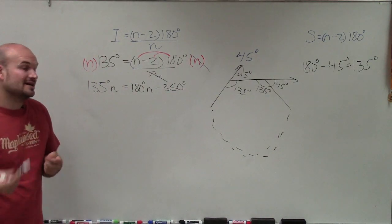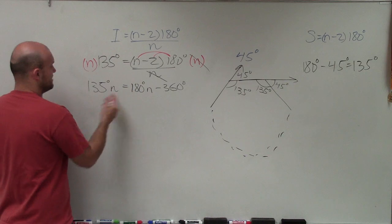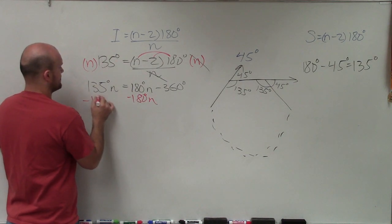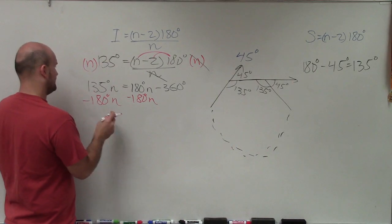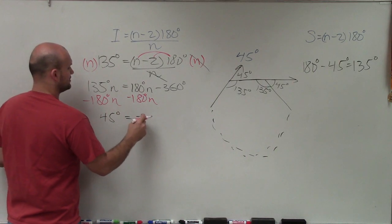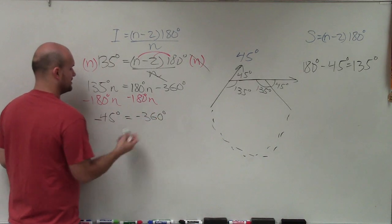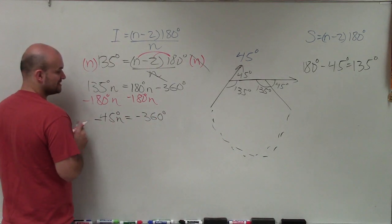Now, to solve the equation, I've got to get the n's by themselves. So I've got to combine them. So to do that, I'll subtract 180 degrees n on both sides. And therefore, I get negative 45 degrees equals negative 360 degrees. Sorry, negative 45 degrees n.